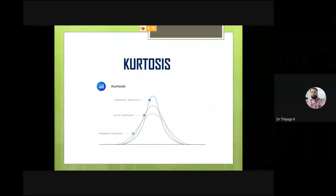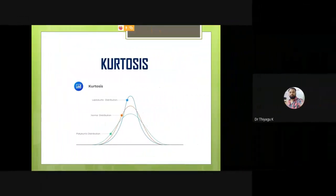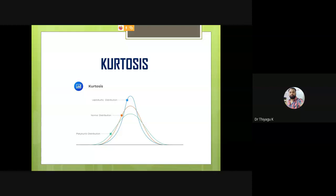Next I am going to the kurtosis. Normally the kurtosis has three types. Even the skewness also has two types — one is called positive — and the same thing is there here also.